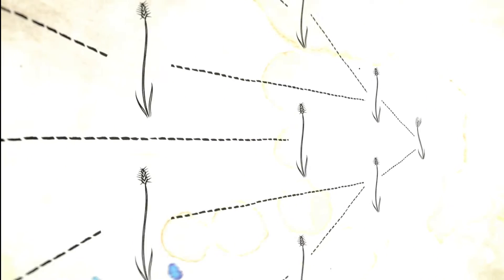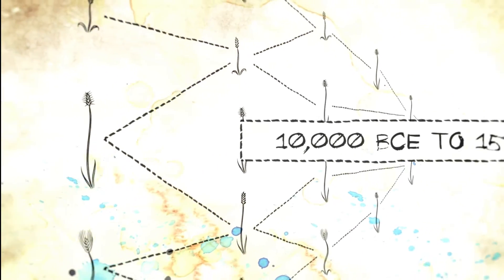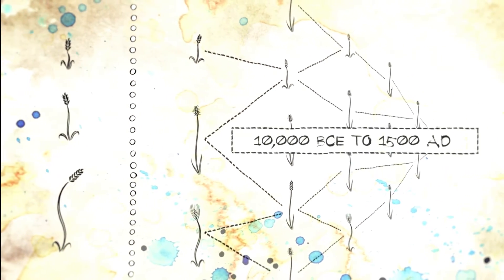For example, wheat is the product of a cross between three different grass species, which is reputed to have happened about 10,000 years ago.